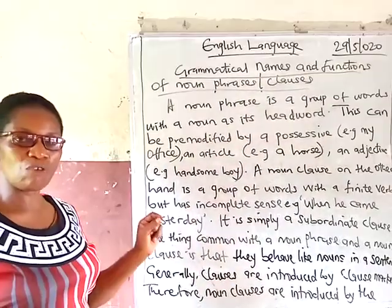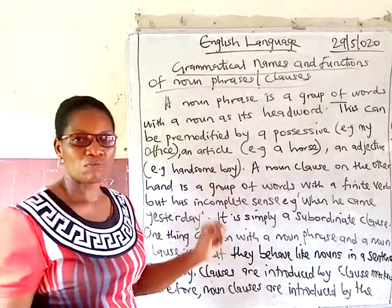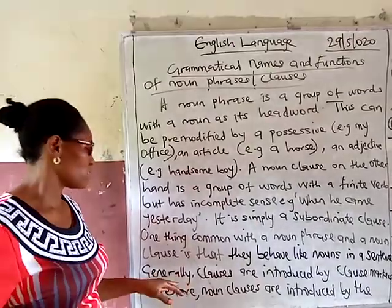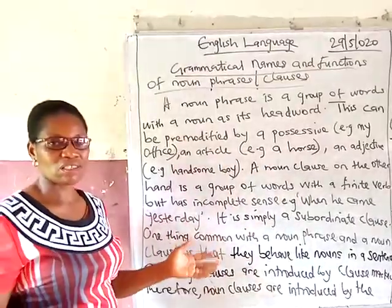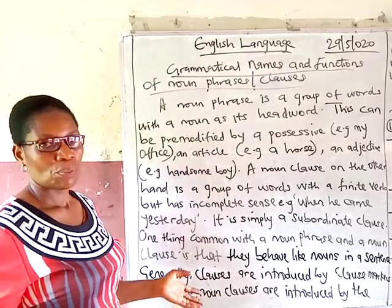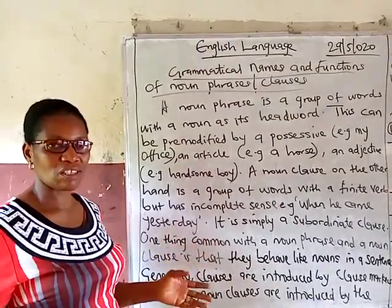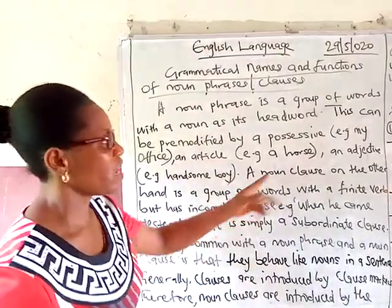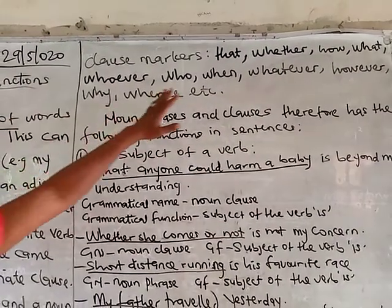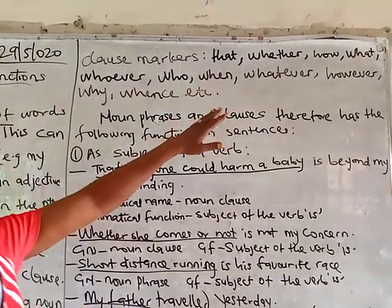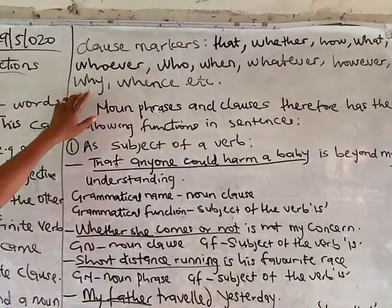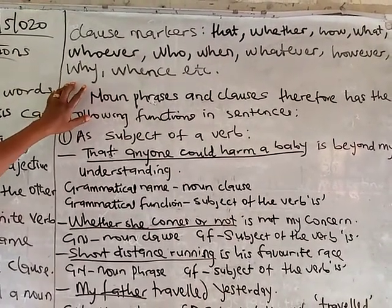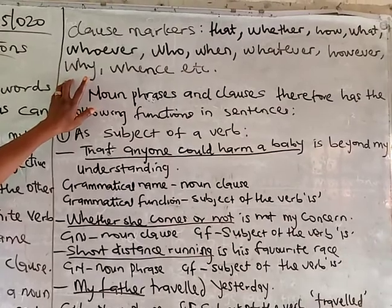In common with a noun phrase and a noun clause is that all of them do the work of a noun — they behave like nouns in sentences. Generally, clauses are introduced by clause markers. All clauses, like adverbial clauses, relative clauses, and other clauses, are introduced by clause markers. The clause markers for noun clauses are: that, whether, how, what, whoever, who, when, whatever, however, and why.